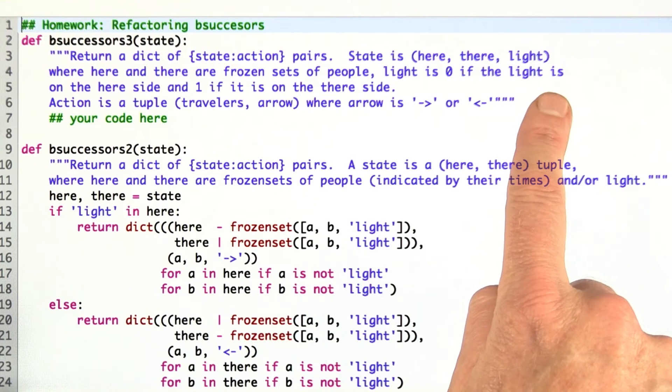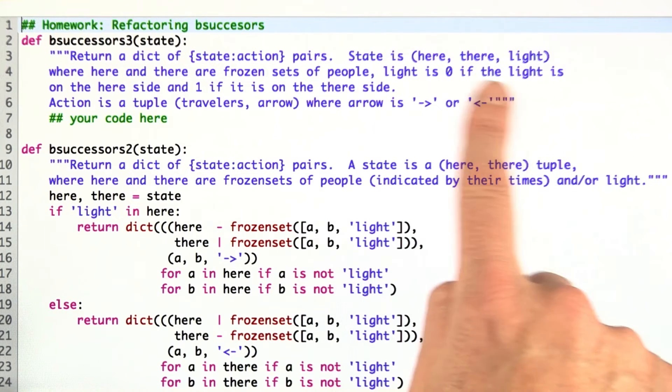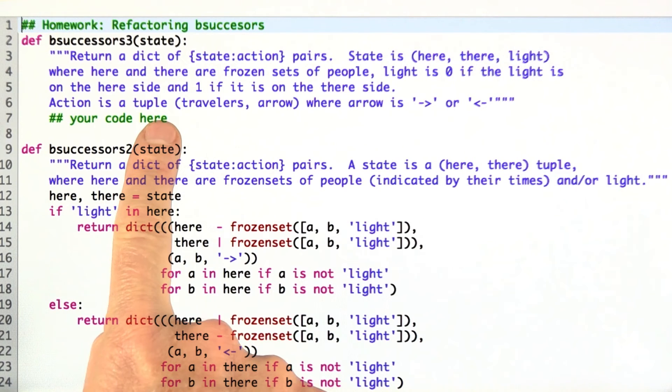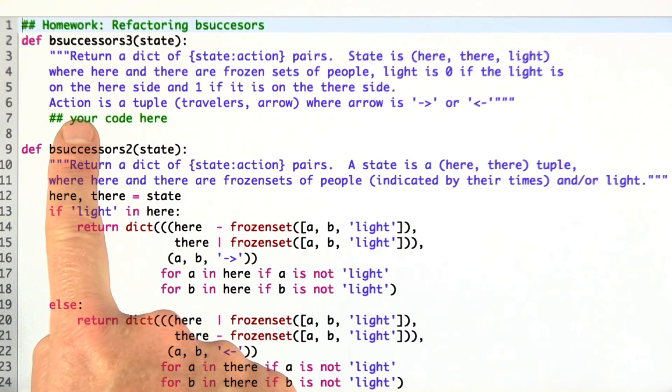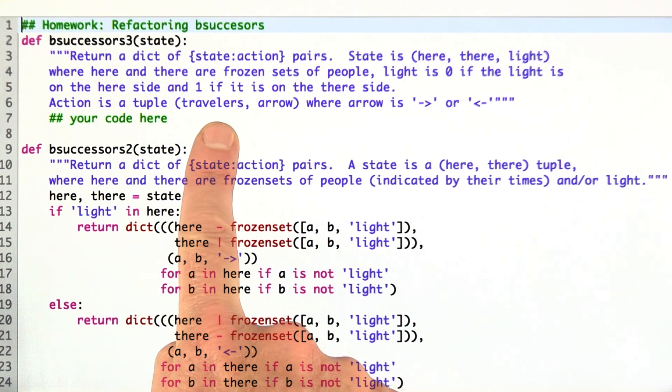It's going to be 0 if the flashlight, the torch, is on the here side and 1 if it's on the there side. And then the tuple for the actions is going to be a little bit different. It's just going to be a set of people, the travelers that are going, and then followed by the arrow.